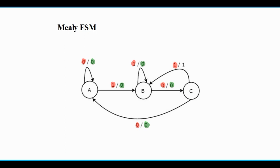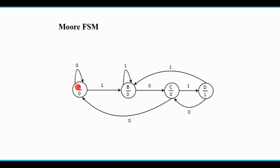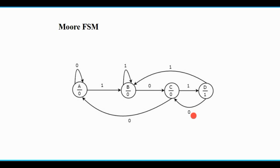But in a Moore FSM there is no difference in the output based on input. The output is determined only by the current state, not by any input. So during state A the output will always be 0, during state B always 0, during state C always 0, and during state D always 1. The inputs on the transitions in a Moore FSM are only used for state transitions.